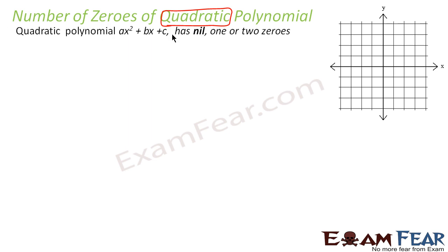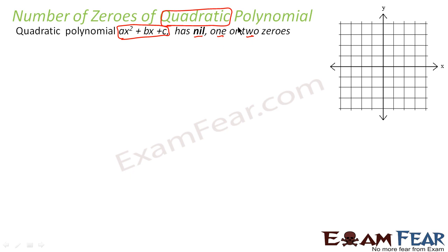A quadratic polynomial is of the form ax² + bx + c. We have learnt this, and we should know that such kind of polynomials can have nil, one, or two zeros — that is, at the max two zeros. It can have zero zeros, one zero, or two zeros. In this slide we will see an example where it has nil zeros, that is no zeros.